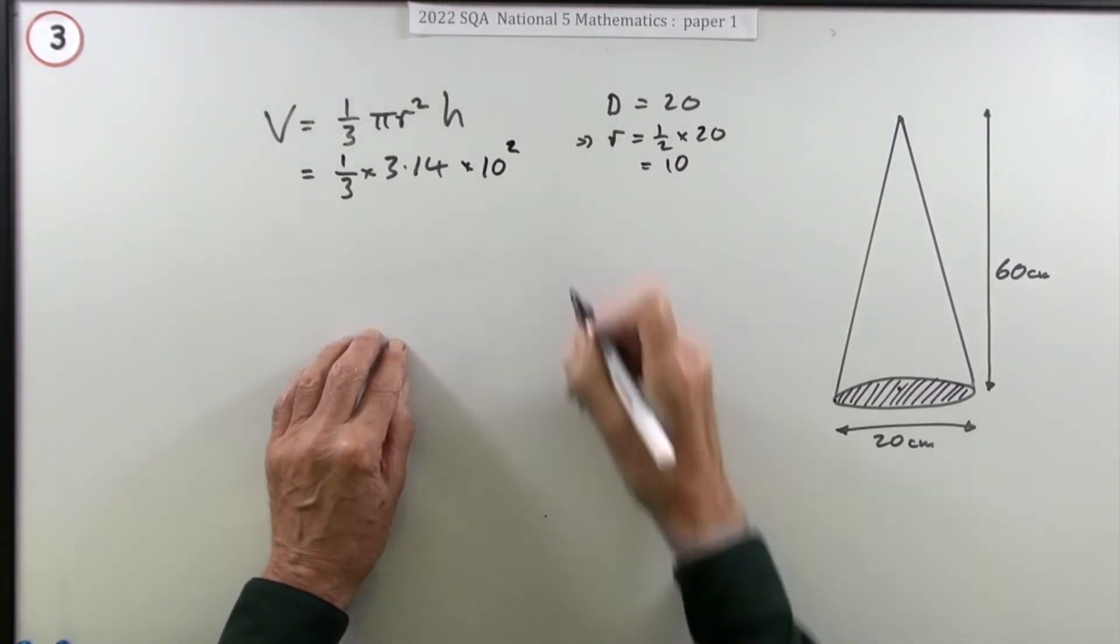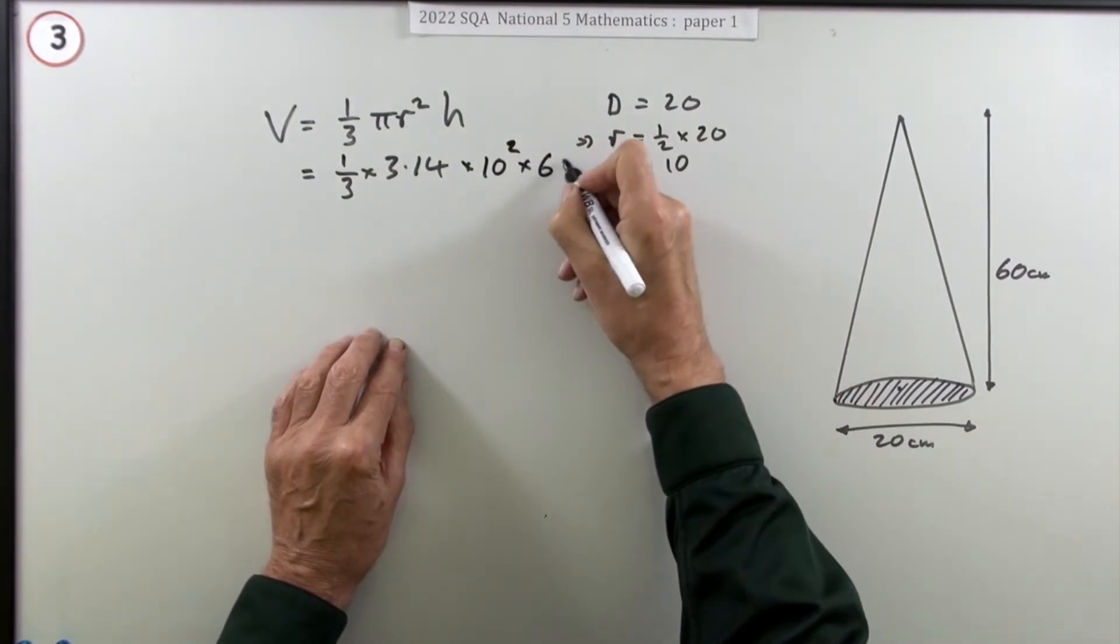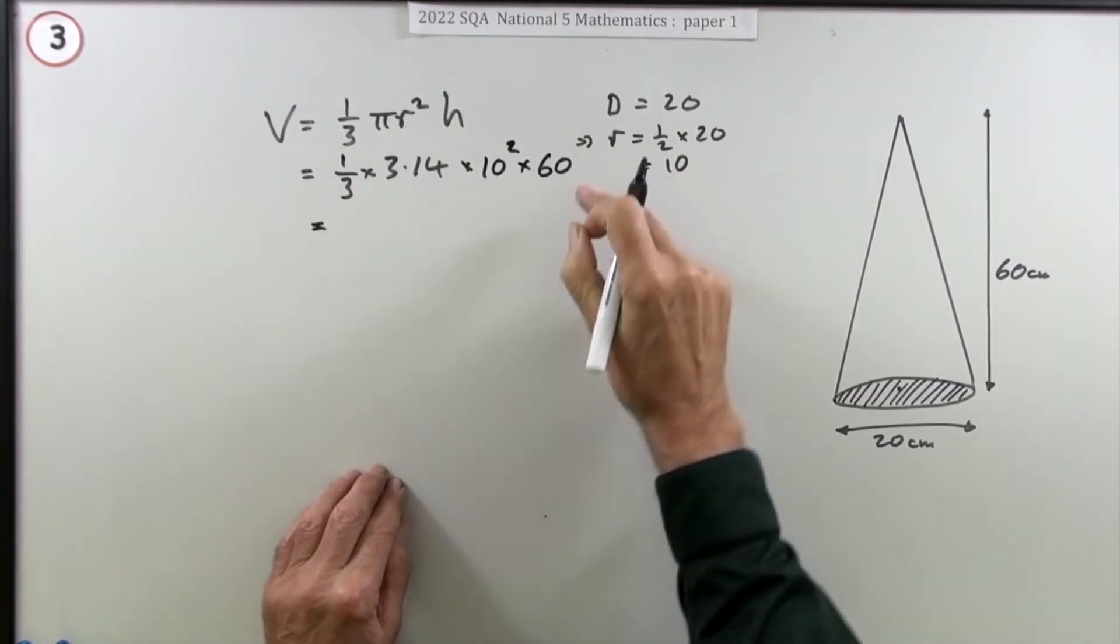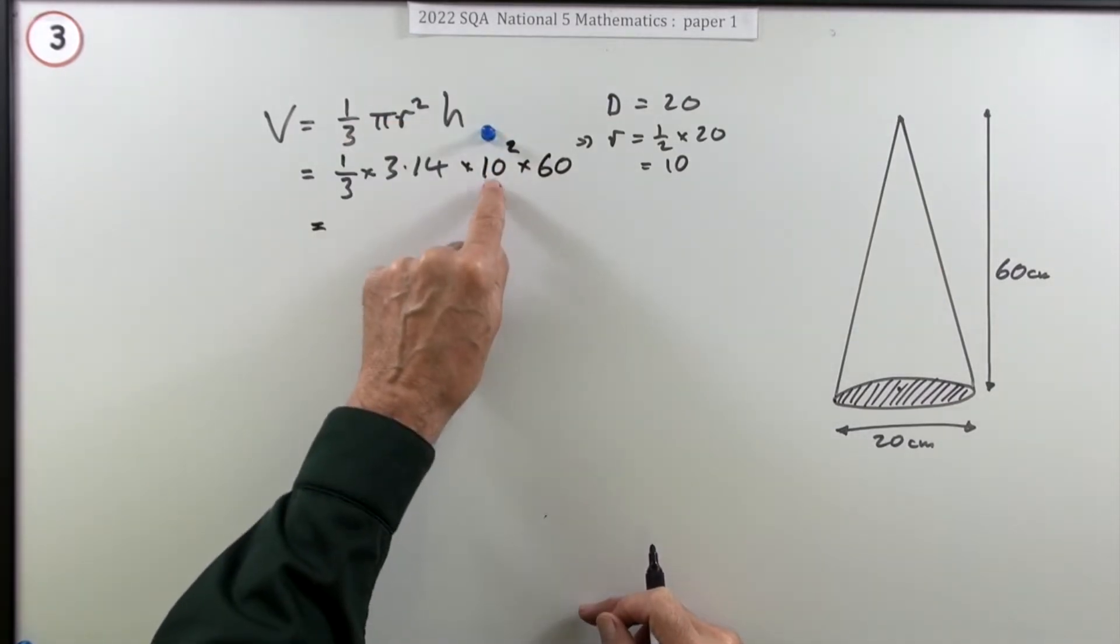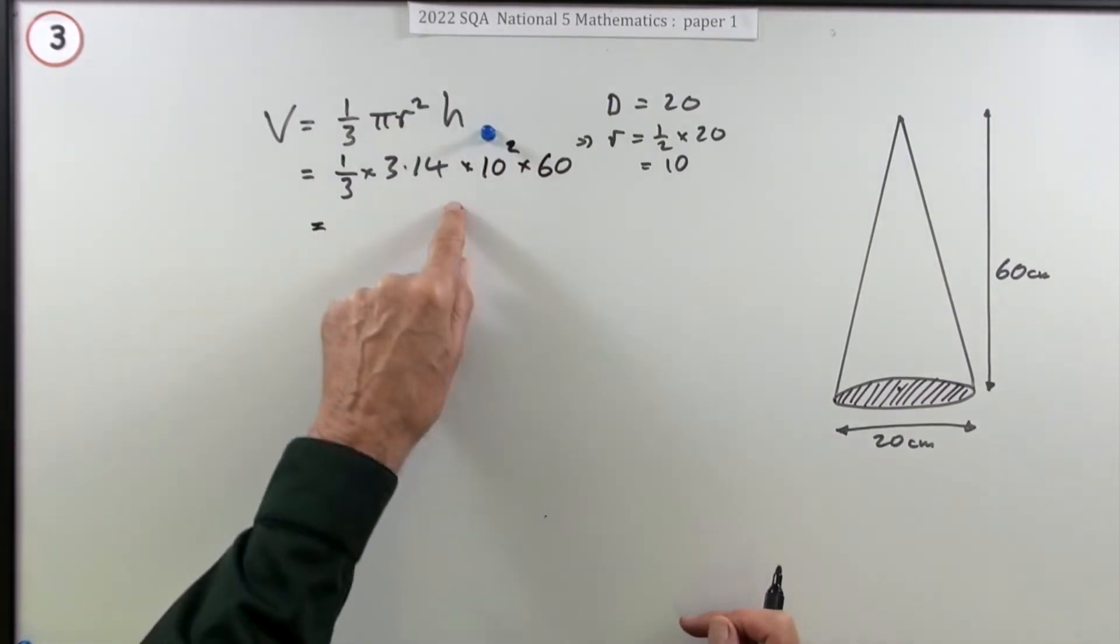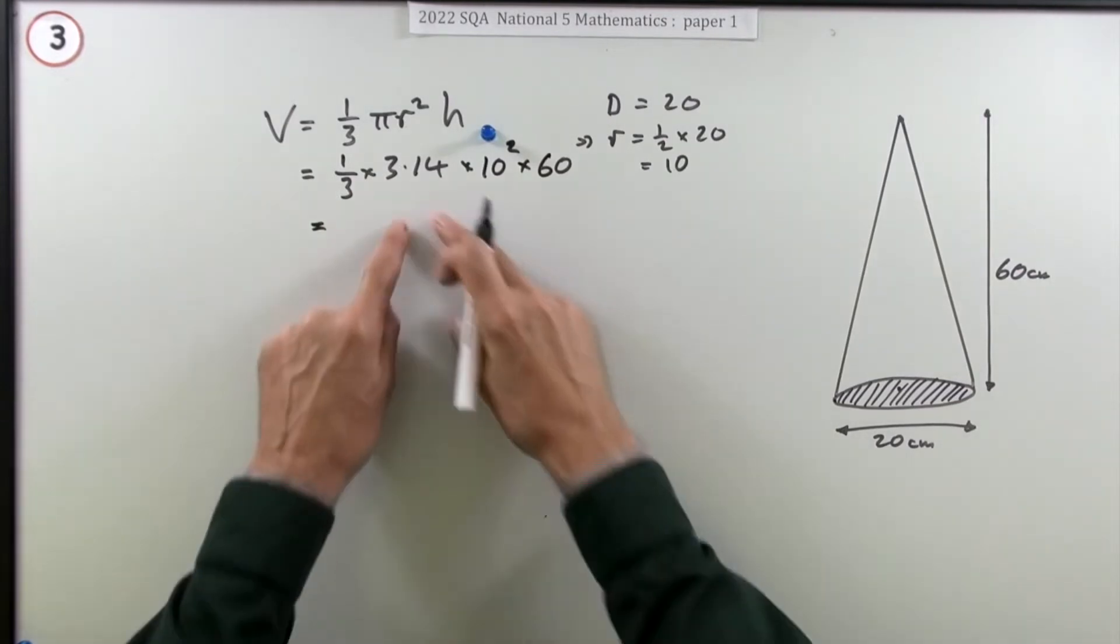So it'll be ⅓ of 10 squared and the height is just the 60. Now doing that, putting the figures in - particularly putting a 10 in instead of a 20 - gets the first mark.